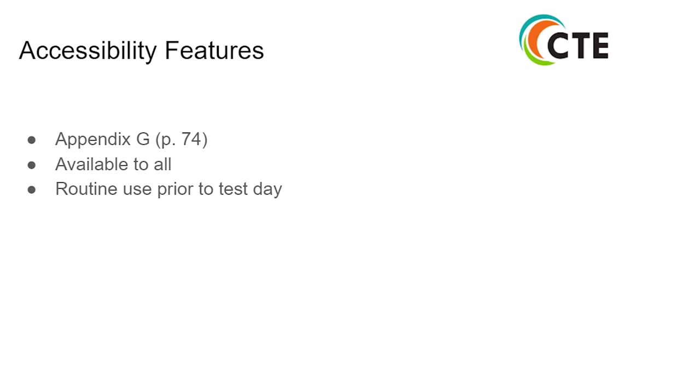Accessibility features can be found in Appendix G, page 74. Please note that these are available to all students participating in the CTE state assessments, and make sure that accessibility features are routine practice prior to test date.